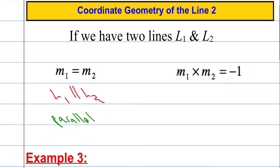And then suppose we have this scenario here where m₁ times m₂ equals negative 1. So if I multiply the two gradients together, we get an answer of negative 1. That means that the two lines are perpendicular. So L1 is perpendicular, and that's the symbol for perpendicular, to L2.